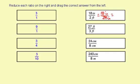So 18 to 24 reduces by 6. It's going to be 3 to 4. And then the inches reduce out, so your answer is 3 fourths.